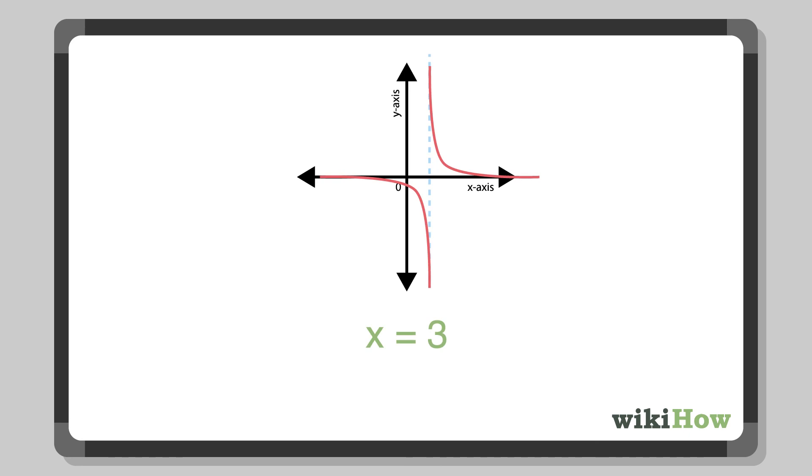On the other hand, a function with a vertical asymptote at x equals 3 would have a domain of all real numbers except for 3.